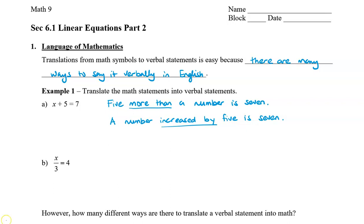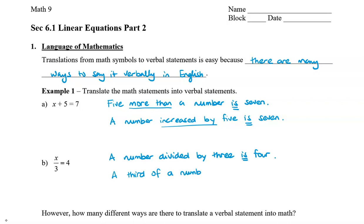Let's take a look at another example. Here, we have x divided by 3 is 4. Again, x is our number, and we can write: a number divided by 3 is 4. Notice that 'is' is always our equals. Another way we can say this is: a third of a number, because that's what divided by 3 is — so a third of a number is 4. And finally, we can also say the quotient of a number and 3 is 4. All of these mean the same thing: we are taking a number and splitting it into three parts.